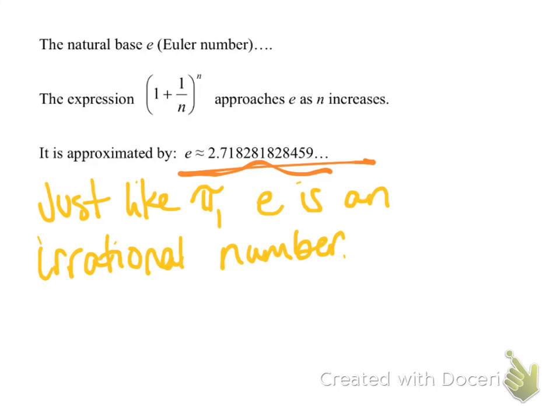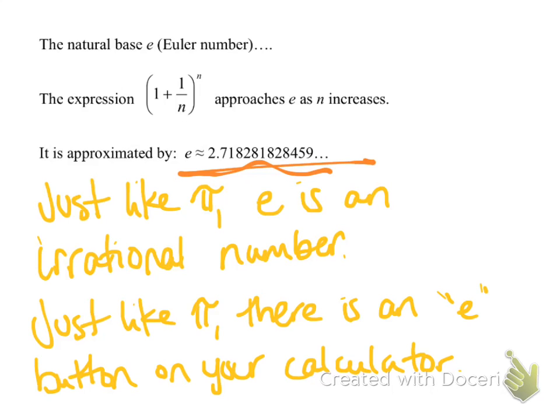So just like pi, e is an irrational number. And also just like pi, there is an e button on your calculator. You should take a minute to try to locate that button.